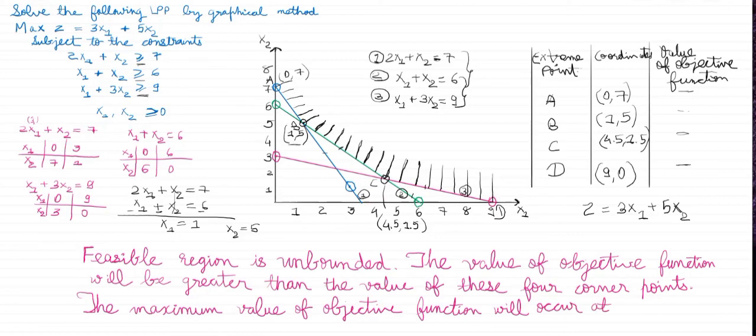If it is asked to you in exam to explain the unbounded solution by graphical method, then you can give the same example and explain it like this and finally conclude that as it is unbounded solution so we won't get any maximum value of the objective function. Thank you.